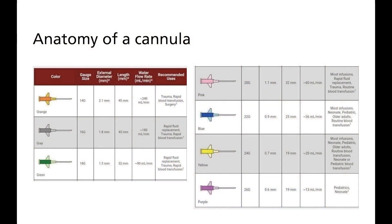It's worth knowing that the gauge system for needles is archaic and the numbers don't relate logically to the dimensions of the needle, unlike French gauge which refers to external diameter. The main thing to bear in mind when selecting a cannula is that there's an exponential drop-off in maximum infusion rate as you decrease in size. From the table, under gravity a litre of fluid can be infused in around 4 minutes through an orange cannula, whereas the same litre takes over 11 minutes through a green cannula, despite both being on the larger end of the spectrum.